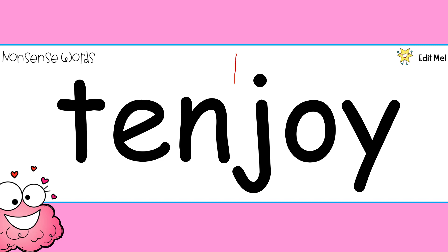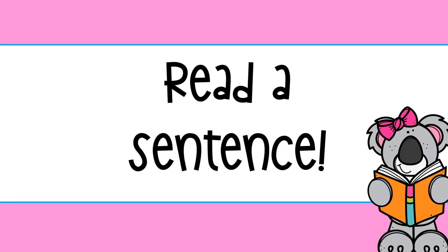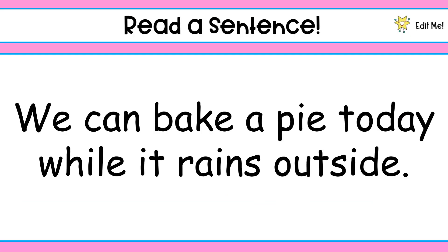I'm going to split this word here and I can see a digraph OI: T-E-N-J-OI — 'tenjoy'. Now we're going to read some sentences. In this sentence I can see some sounds that we know: a split digraph, IE as in pies and fries, AY as in may I play, W, AI as in snail in the rain, OW as in shouted out, and the split digraph I. The sentence reads: we can bake a pie today while it rains outside.